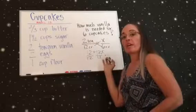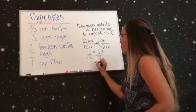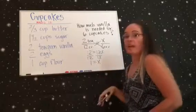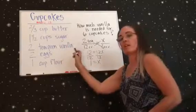And what you'll get is 12 divided by 12 is 1. So 1 is equal to x. And so for six cupcakes you're only going to use one teaspoon of vanilla.